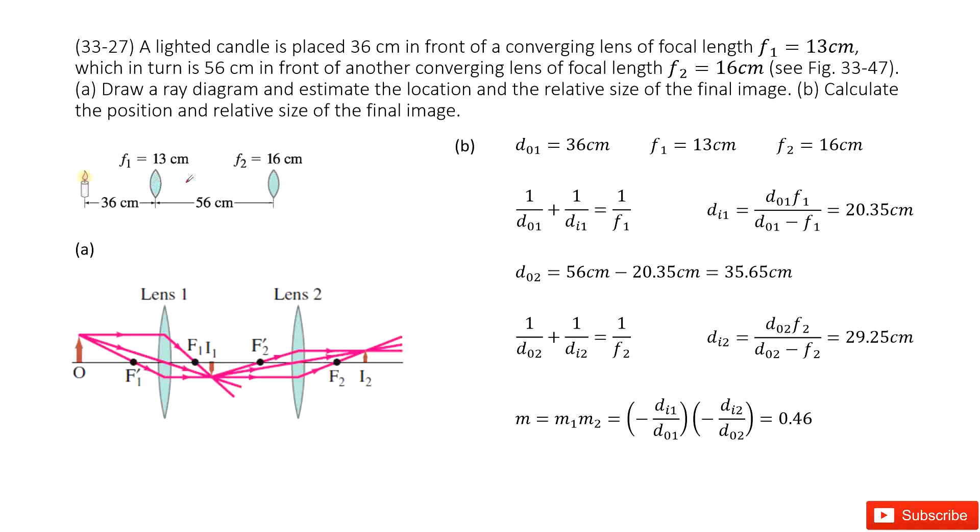So we look at this system. We have F1, F2, these two lenses, and the object distance DO1, and the distance between these two lenses.